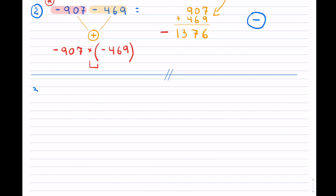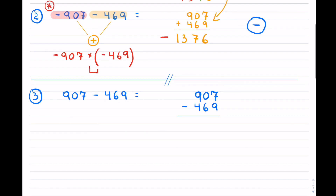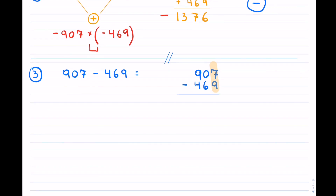Now what happens next — I'm going to subtract. Imagine I have 907 dollars in my account and I'm going to spend 469 dollars. I put 907 on top and subtract 469 at the bottom. Now, because I am subtracting, look what happens: I can't subtract 7 minus 9, so I run into a problem.